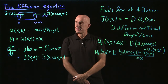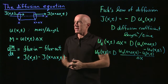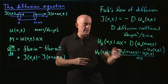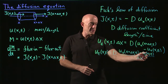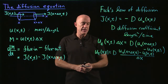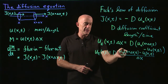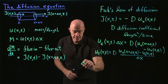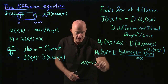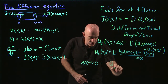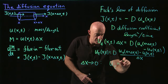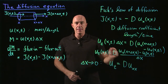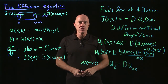This is valid when delta x is small, but to get a differential equation, we take the limit as delta x goes to zero. The expression u sub x at (x + delta x, t) minus u sub x at (x, t), all divided by delta x, becomes the partial derivative with respect to x of the partial derivative of u with respect to x — that's the second partial derivative. So taking the limit as delta x goes to zero, we get the partial of u with respect to t equals the diffusion coefficient D times the second derivative of u with respect to x. That is the one-dimensional diffusion equation.